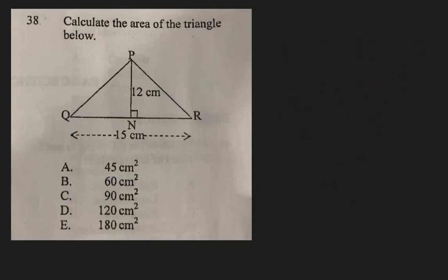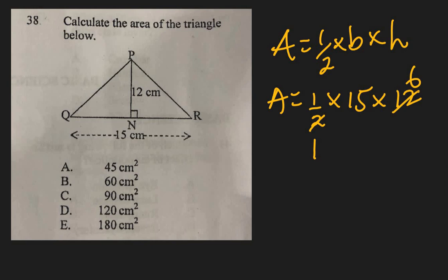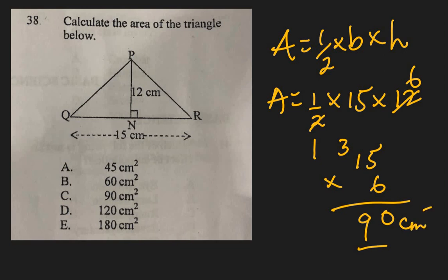Question 38: Calculate the area of a triangle with base 15 cm and height 12 cm. Area = ½ × base × height = ½ × 15 × 12. Simplify: ½ × 12 = 6, then 15 × 6 = 90 cm². The right answer is C: 90 cm².